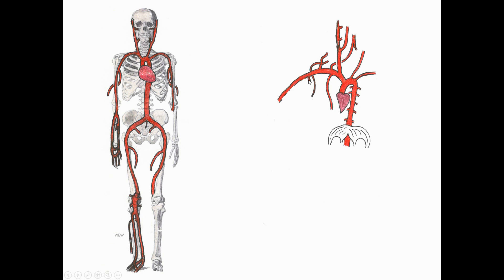The first part of the axillary artery gives off a single branch, the superior thoracic artery. The second part has two branches: the thoracoacromial trunk branching out to the area around the clavicle and deltoid, and the lateral thoracic artery going along the body wall. The third part gives off three branches: the subscapular, which branches into the circumflex scapular and thoracodorsal, as well as the anterior and posterior circumflex humeral arteries going around the humerus.